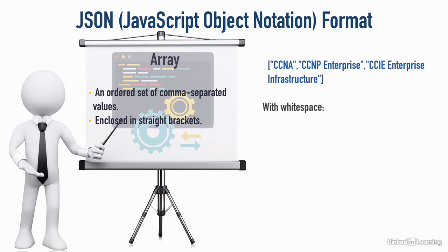And if we were to insert white space here, it's going to look something like this. We're going to have the straight brackets on their own lines, and each value is going to be on its own line. Again, we still have a comma separator. Notice after CCNA, there's a comma. After CCNP Enterprise, there's a comma. And those are the two different data structures we have.